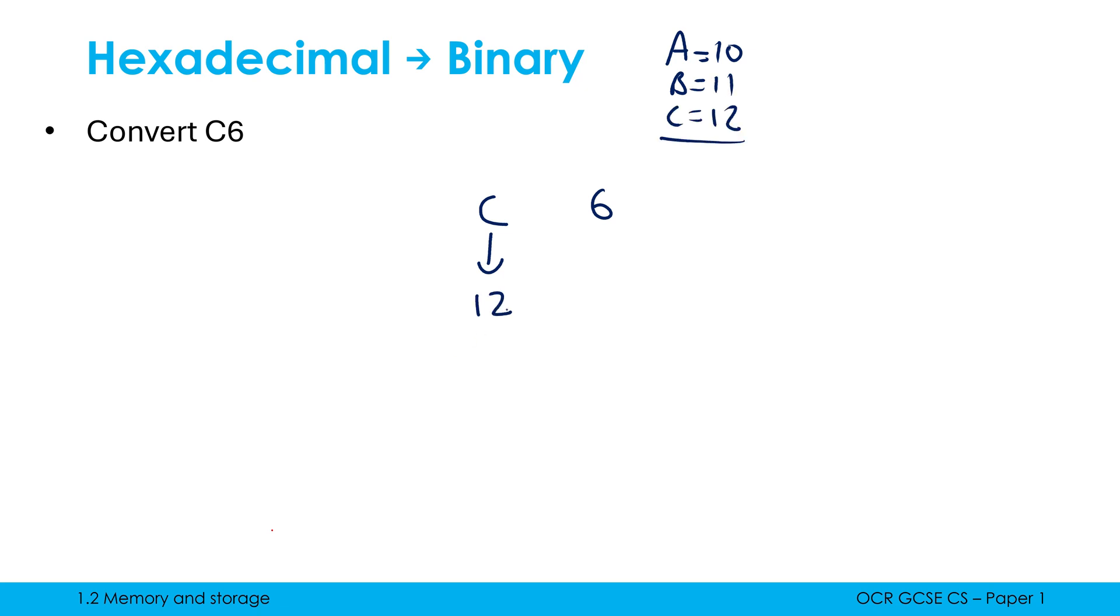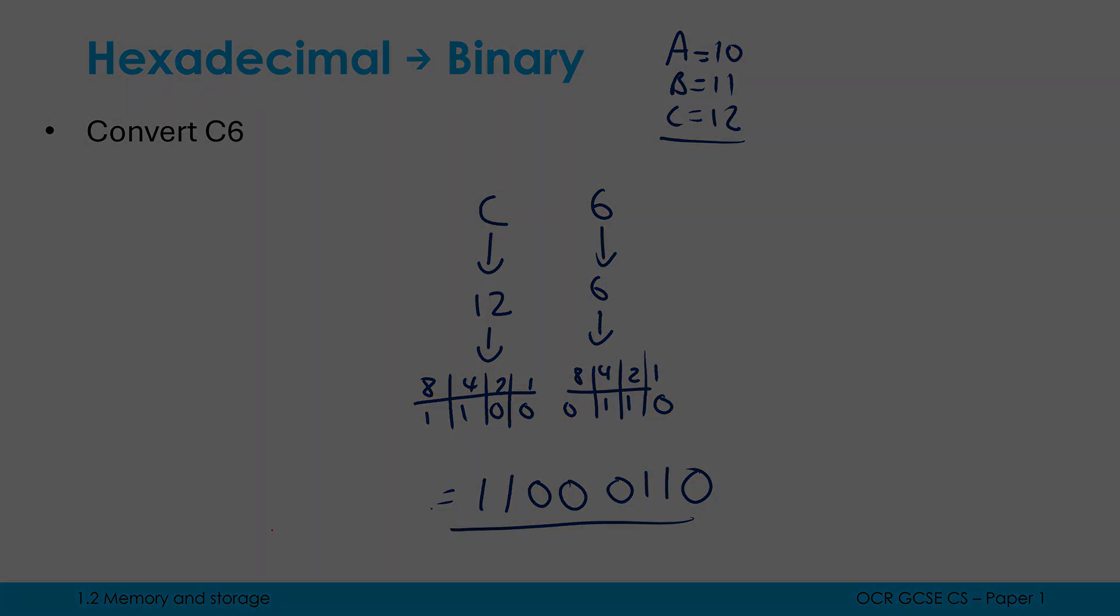So really C is representing 12 in binary and I now need to find what 12 is in binary. I can do my table if I'm not quite sure. How do I make 12 with the columns? 8 plus 4 is 12 so it's like that. 6 is just 6 in binary. How do I put 6 into binary? Well I can do 4 plus 2 is 6 so that is my nibble for 6. Again I just combine my two sides together to give me my actual answer.